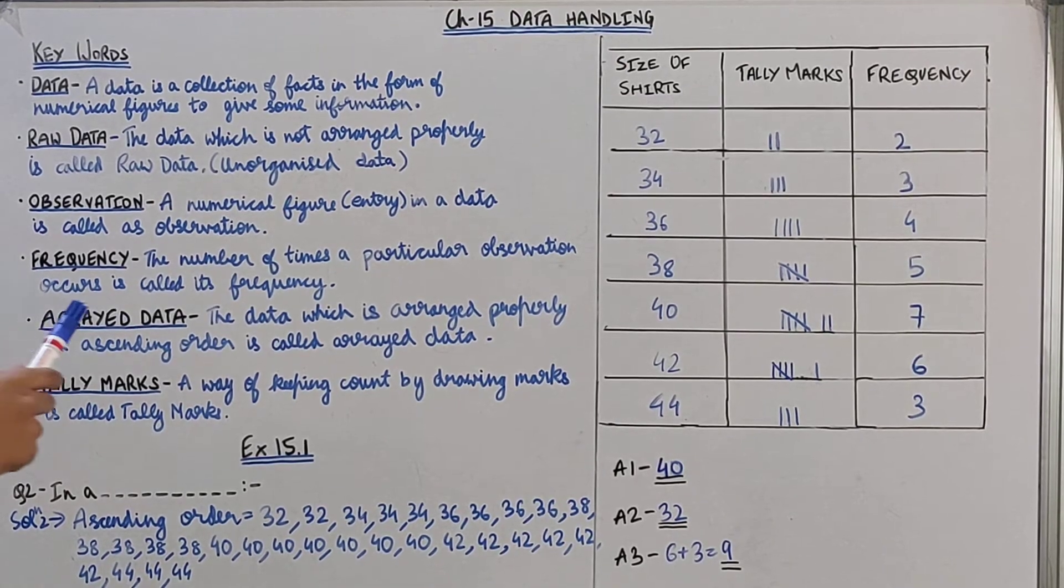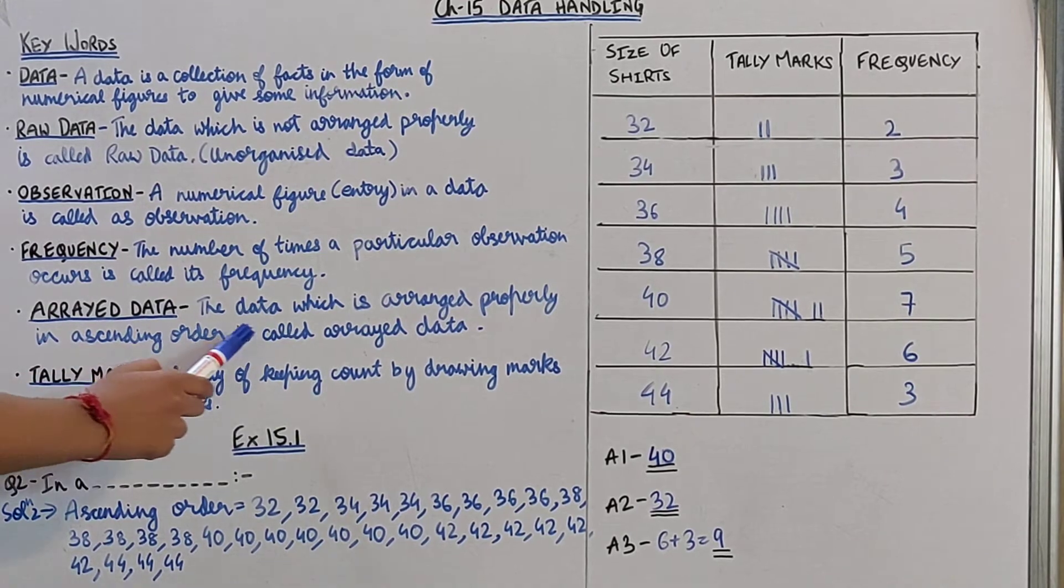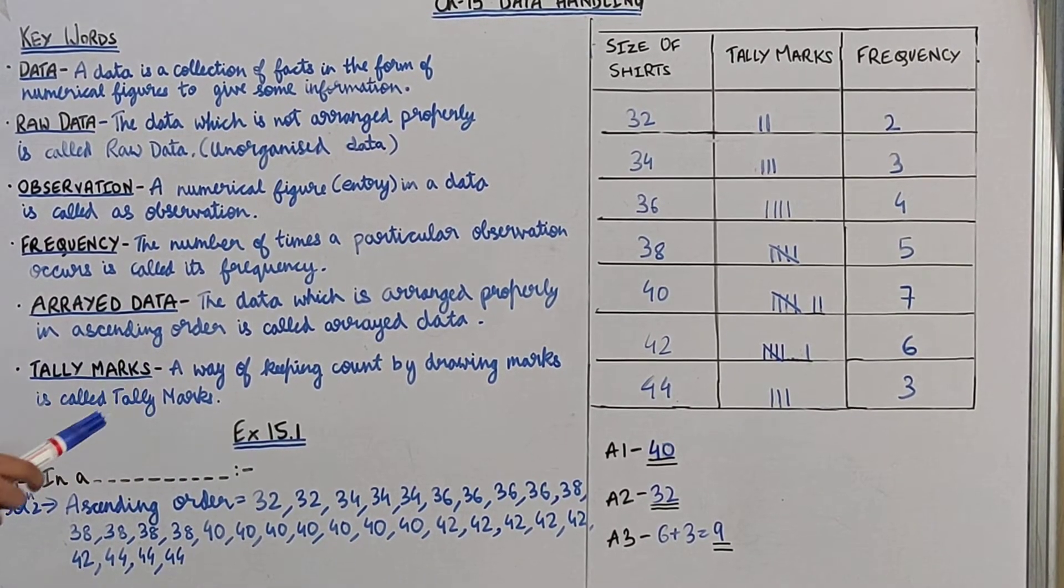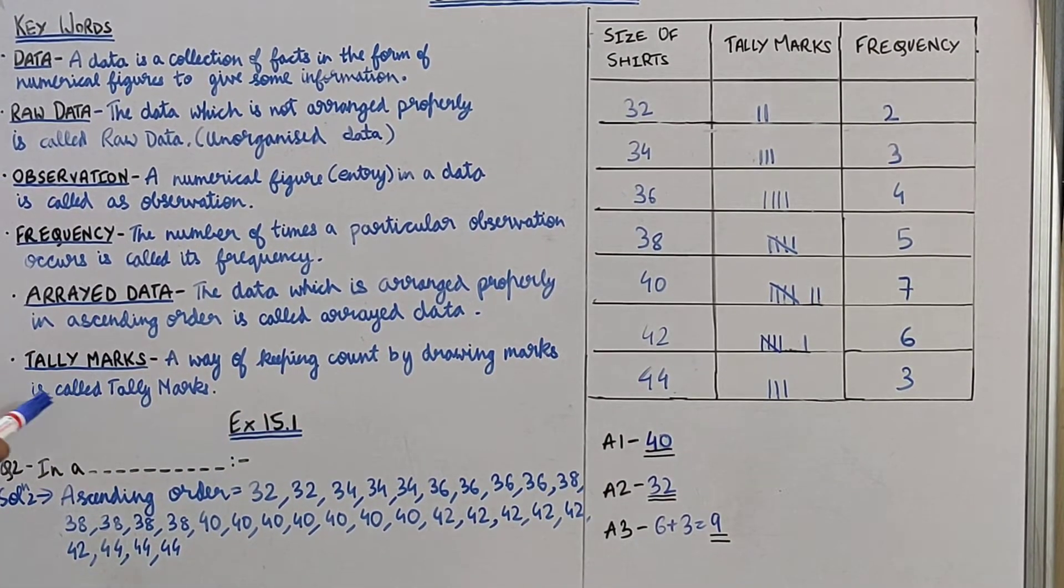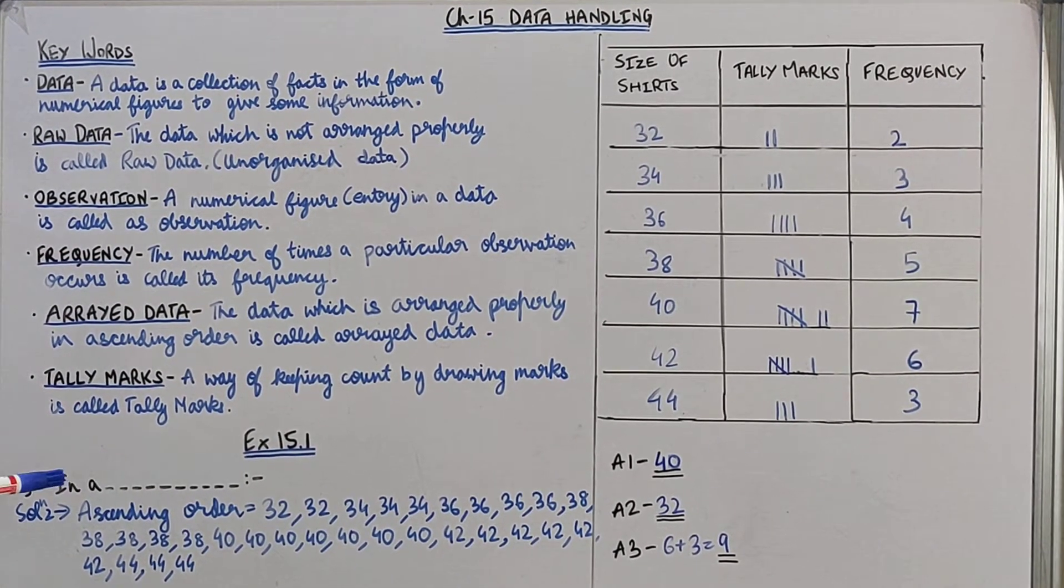Then array data. The data which is arranged properly in ascending order is called array data. Then tally marks. A way of keeping count by drawing marks is called tally marks. These all keywords will be understood in the upcoming questions.